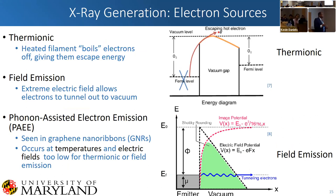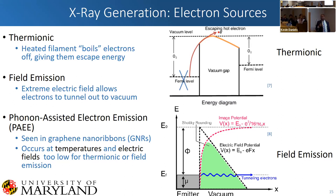Electron sources are either some tungsten filament where you're heating it and blowing off electrons with enough energy to cross a vacuum gap, or field emission which uses really high electric fields to allow electrons to tunnel out and be accelerated. What I'm proposing is completely different: phonon-assisted electron emission. This has already been observed in graphene nanoribbons suspended over some gap, occurring at temperatures and electric fields way too low for thermionic or field emission. That really is our running premise behind making these sources.